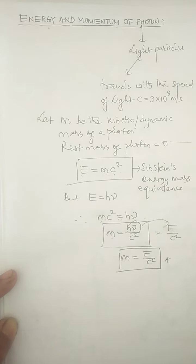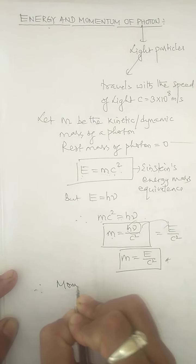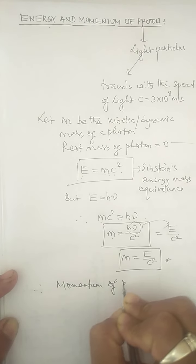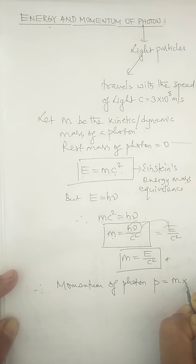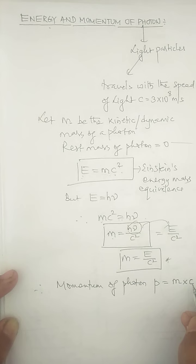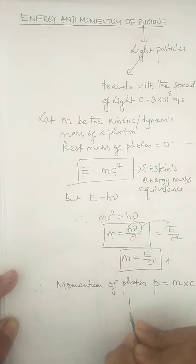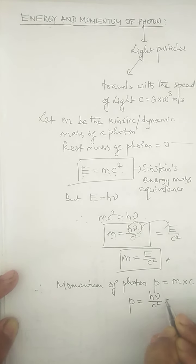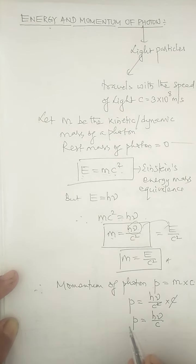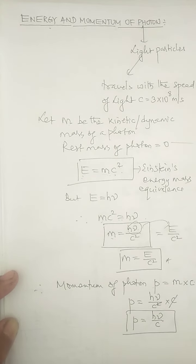Now we measure the momentum of the photon. Photon has momentum also. Momentum is mass into velocity. The momentum of photon is marked by p, and since the photon travels at the speed of light c, p = mc. Substituting m = hν/c², we get p = (hν/c²) × c, so the c's cancel, giving p = hν/c. This is the momentum of the photon.